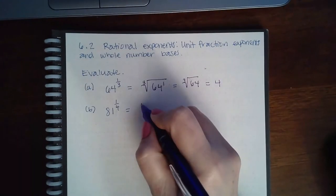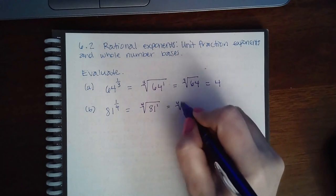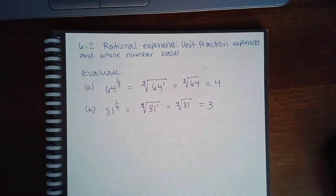Then here you've got the 4 index, a power of 1. So that's just the 4th root of 81, which happens to be 3.